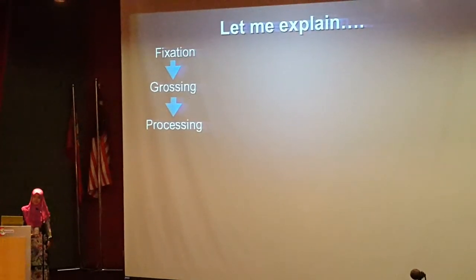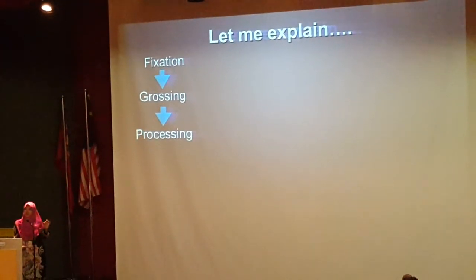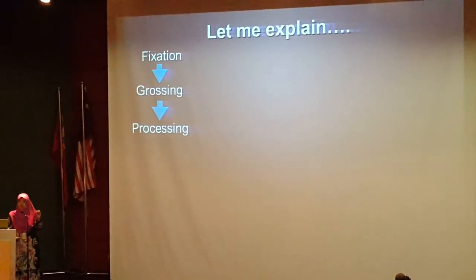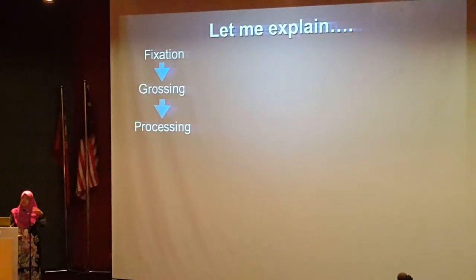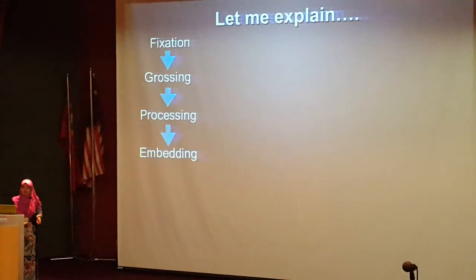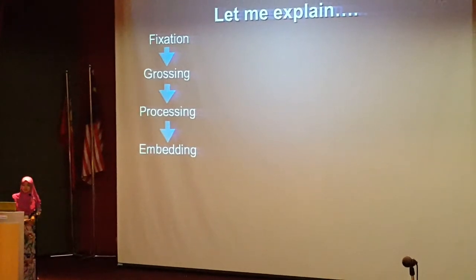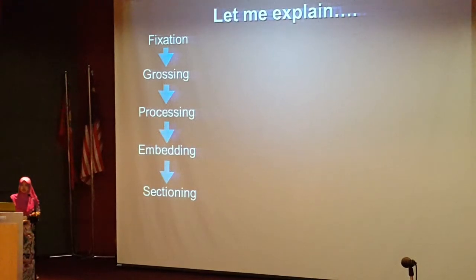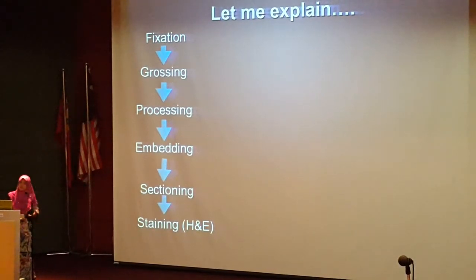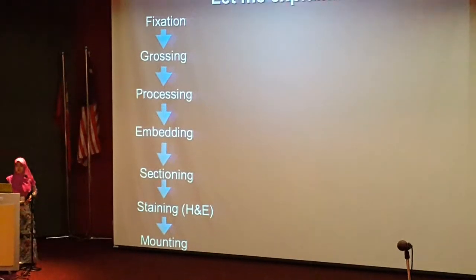Once we've done our surgical cut-up, we subject the specimen to processing. If the tissue is small — below 10 mm, not too bloody, and well fixed — we can process it straight away with a rapid protocol that takes just under 4 hours. For bigger tissue and non-urgent samples, it goes into overnight processing, which takes 16 to 18 hours. After processing, we embed the tissue in paraffin wax, which hardens, followed by a short period on ice before sectioning. After sectioning, we stain with haematoxylin and eosin, then mount and send to the pathologist for evaluation.